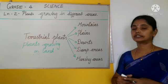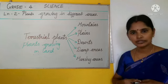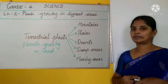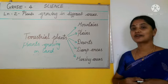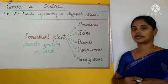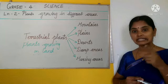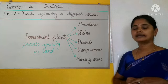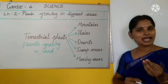About this swampy region and marshy land, what kind of plants are growing there? Mangroves are growing there. What type of roots do they have? Breathing roots.